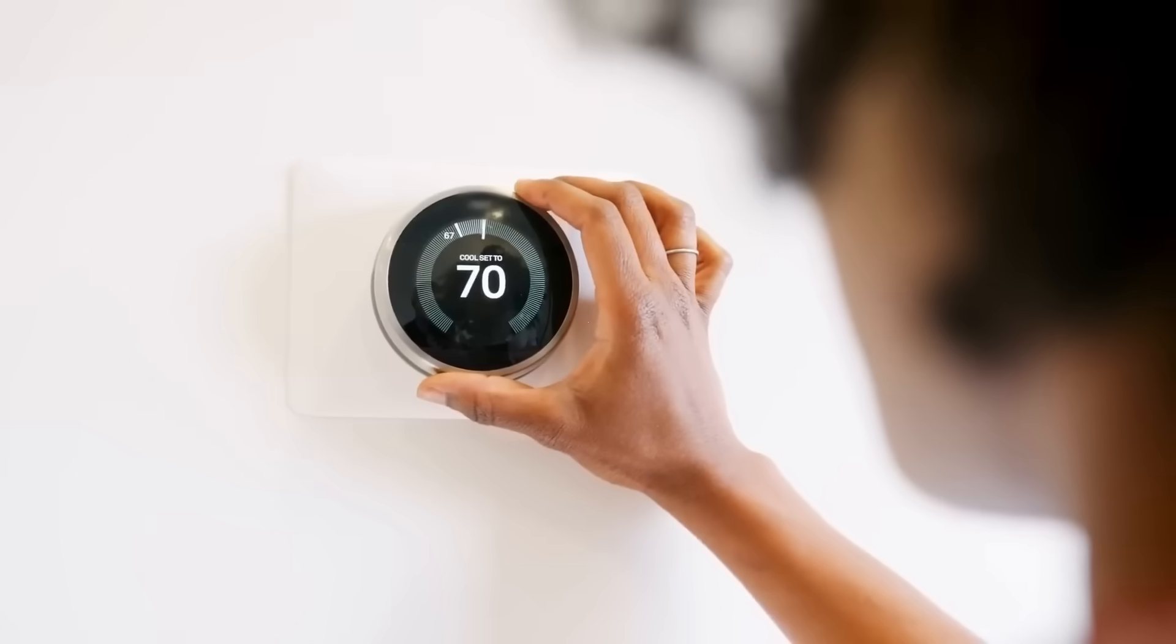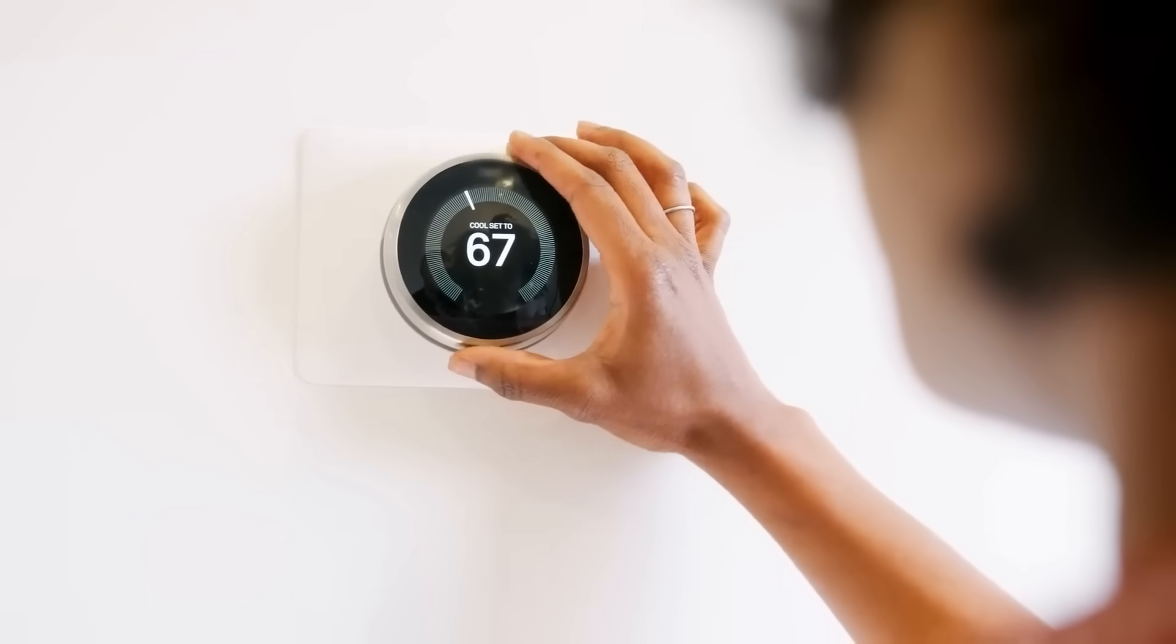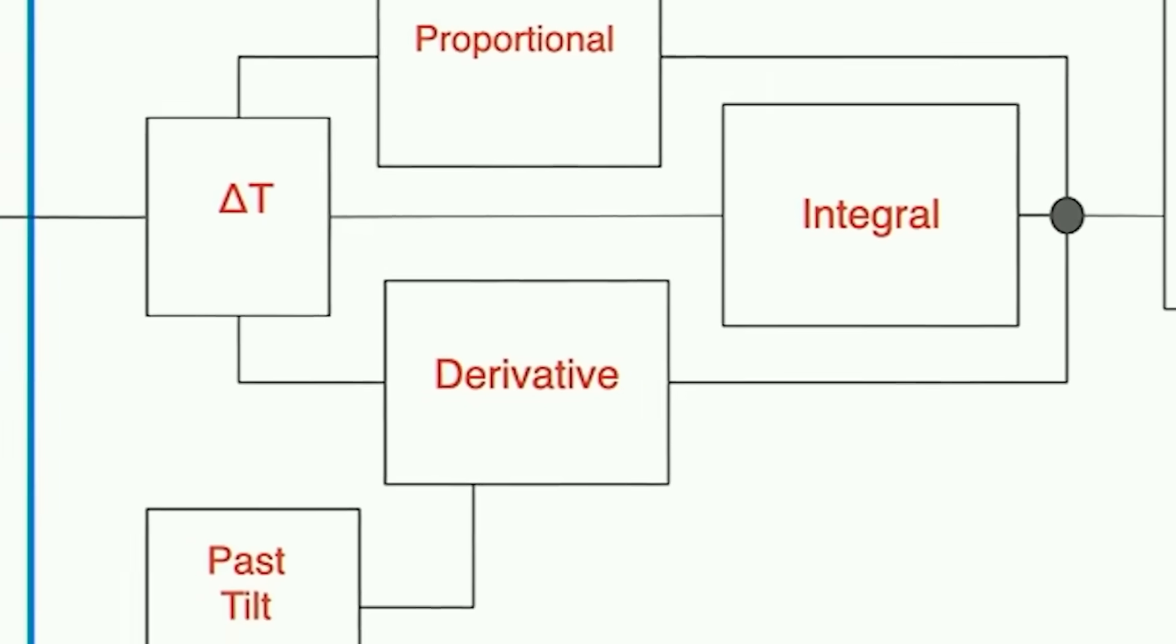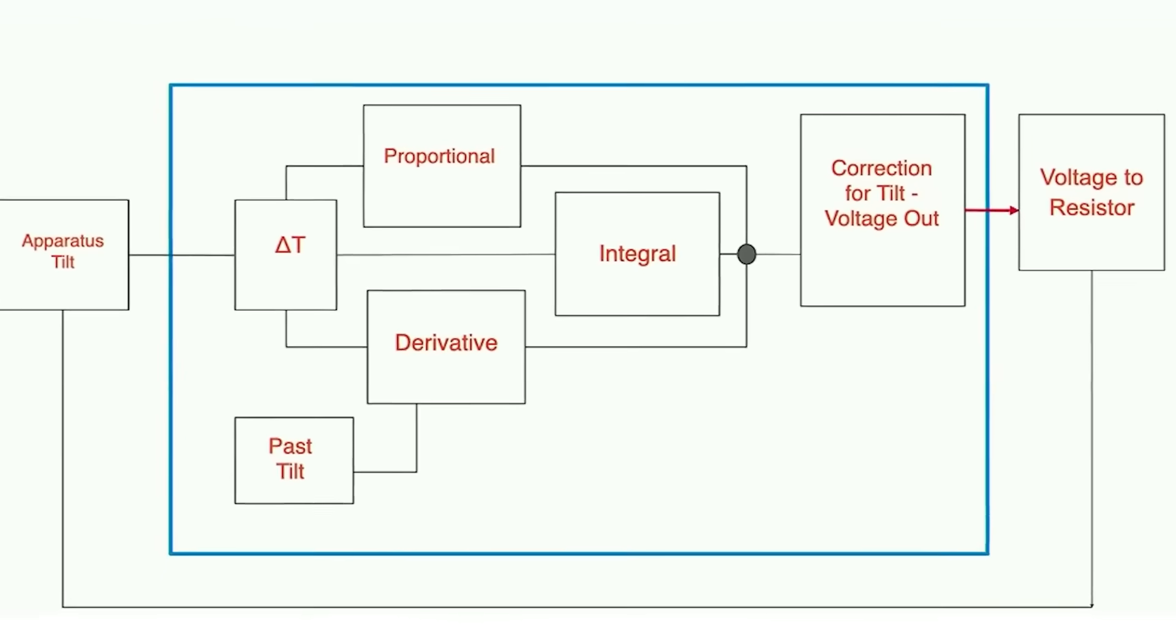But you can overshoot very easily and get into an oscillation with a thermostat unless you damp that by constraining what's called the integral term and applying a dissipative term, a derivative term, to correct for the oscillation so that you get a nice stable solution that's controllable, that's predictable.